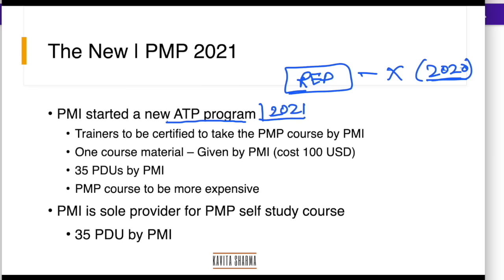Previously, when you had REPs, anybody could train you on the PMP subject if he or she was a PMP certified person. That has changed. Now you need to be trained and certified by PMI so that you can train people. Please check from whoever you are taking a training from whether that person is certified by PMI or not. There has to be only an authorized trainer who can give trainings for the PMP exam.